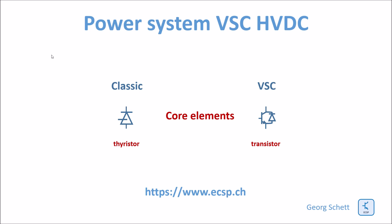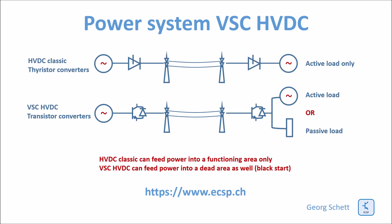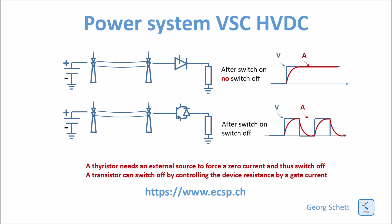The transistor used here is called an IGBT. HVDC Classic can feed power only into an active AC network, whereas VSC HVDC with transistor converters can feed into both an active network and a passive network. The key difference lies in the inverter — the part which rebuilds an AC from a DC source. The DC source, remember, is the line.